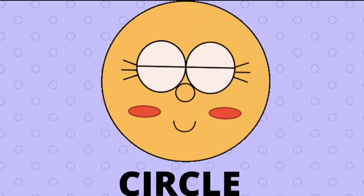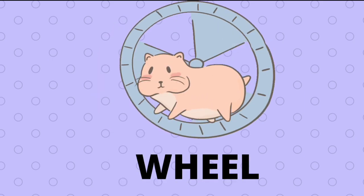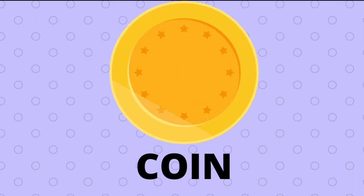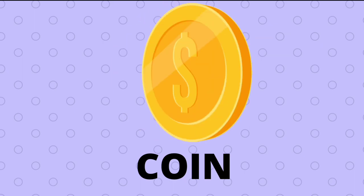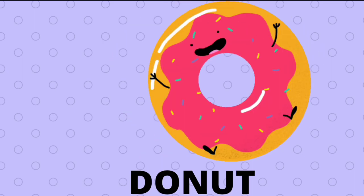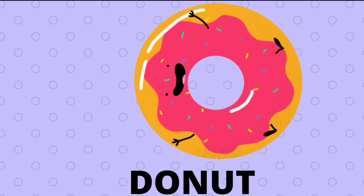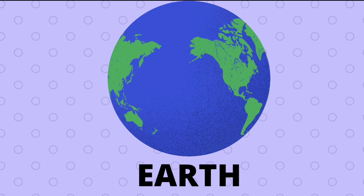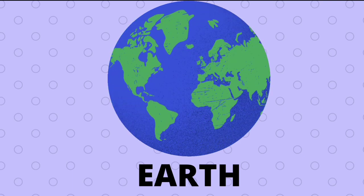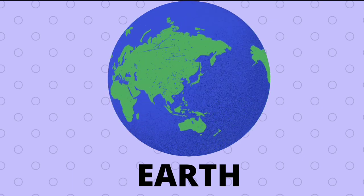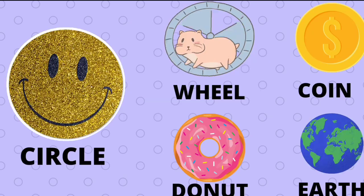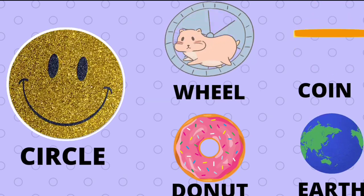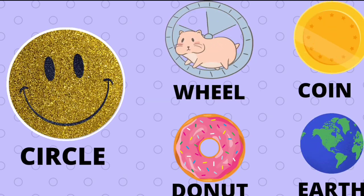Circle. Circle: wheel. Circle: coin. Circle: donut. Circle: earth. Shape circle — wheel, coin, donut, earth.